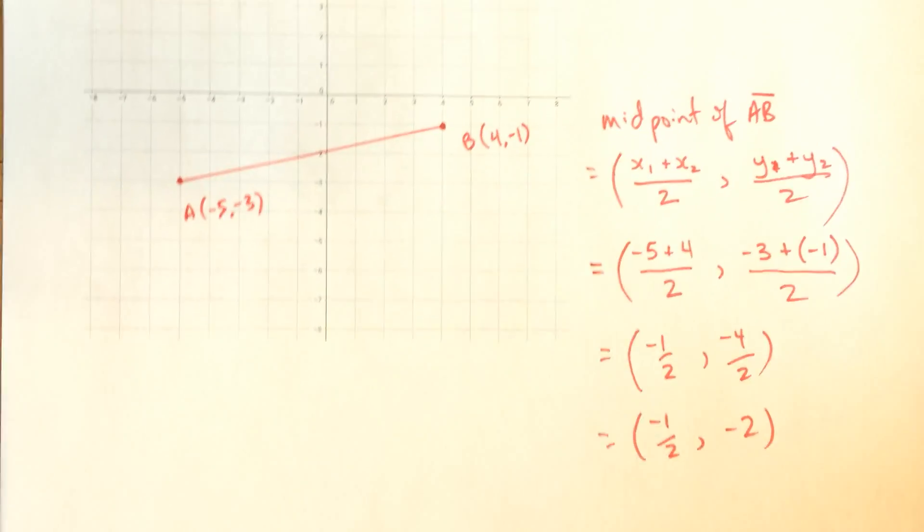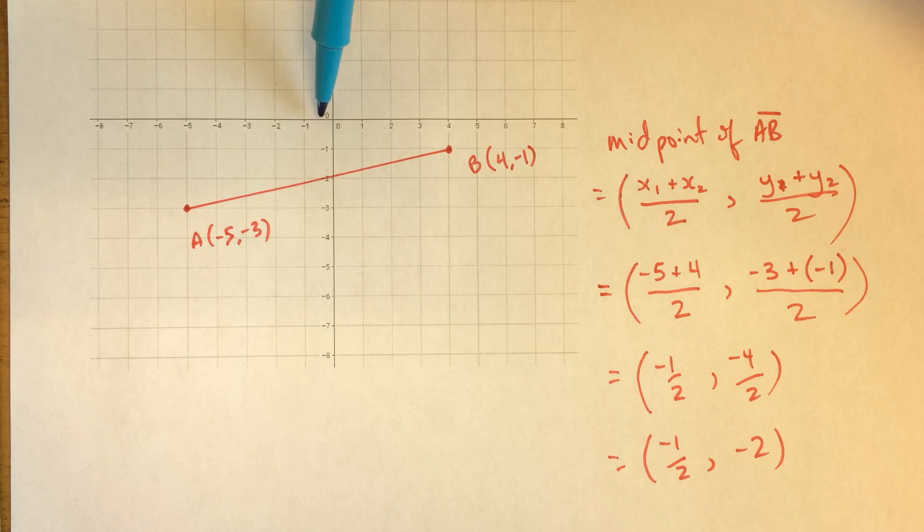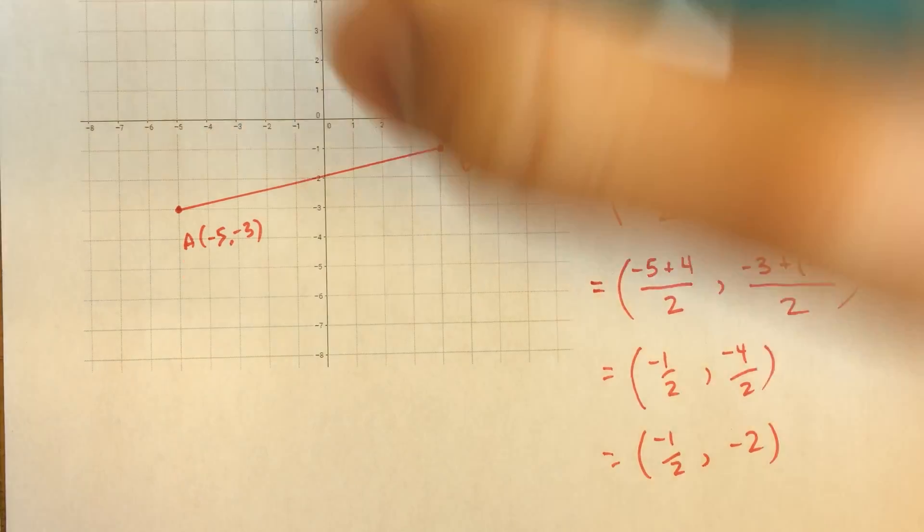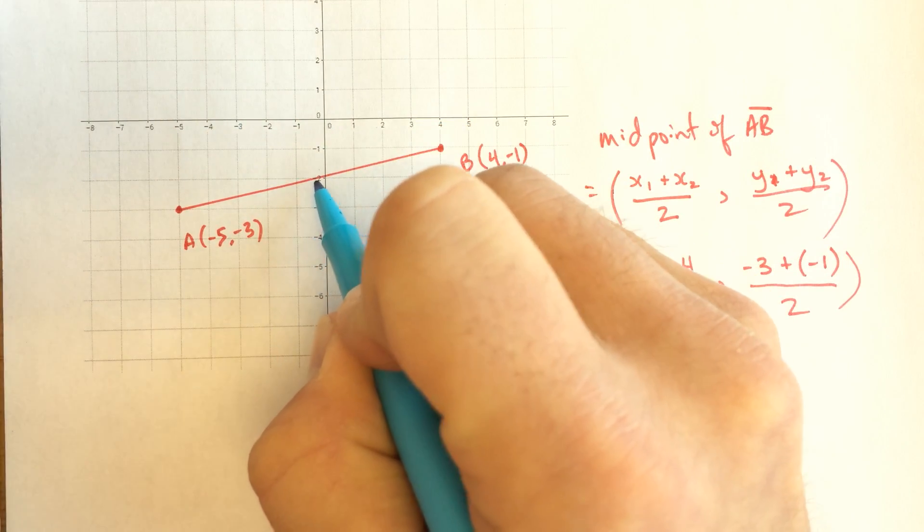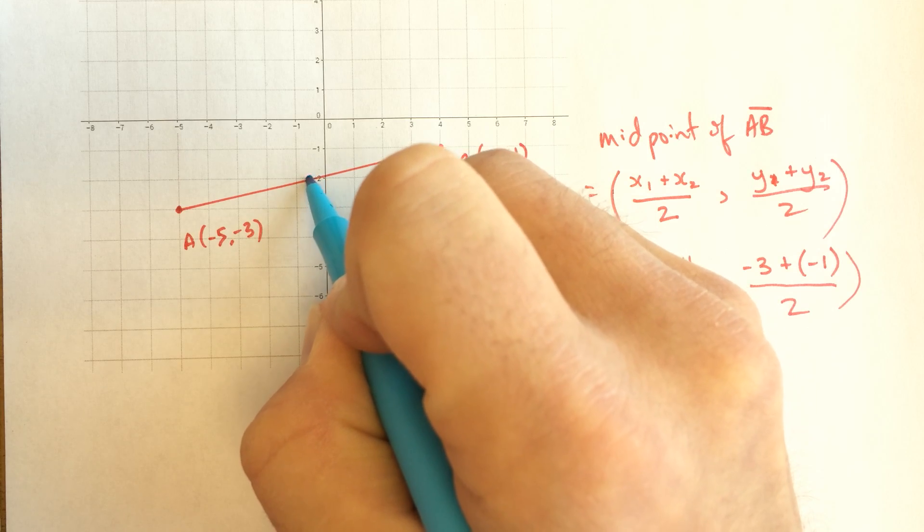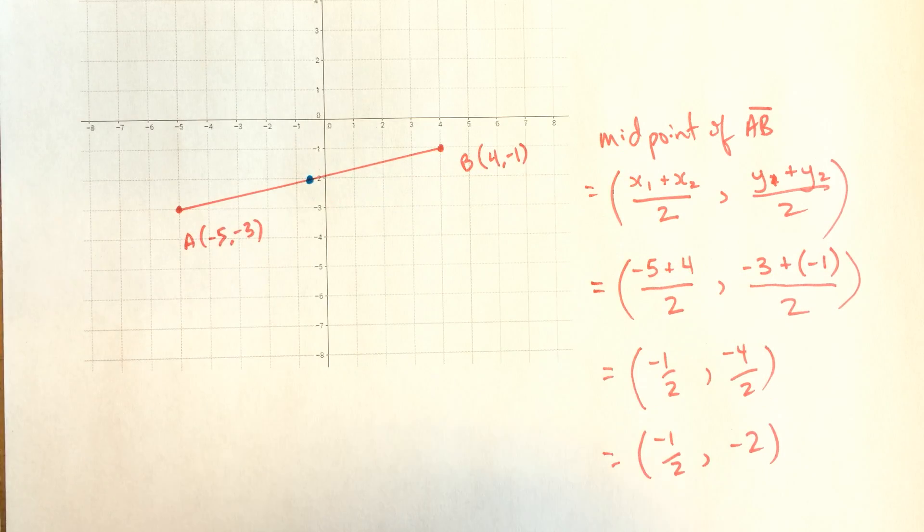So let's plot that on our graph. Negative 1 half is here. Negative 2 going down is right there. And so you can see my graph wouldn't have been perfect if I was trying to just eyeball this. That's why it's a good idea to do things algebraically.